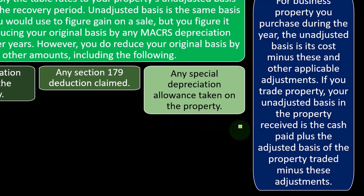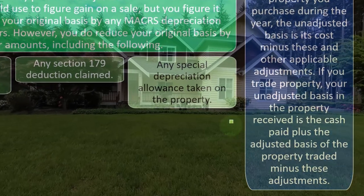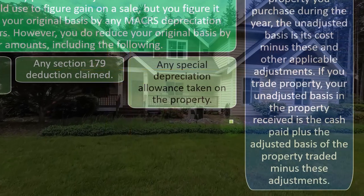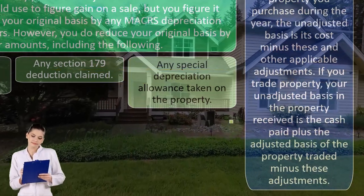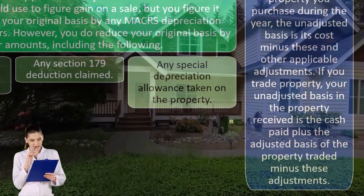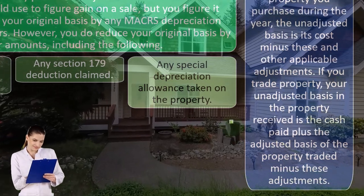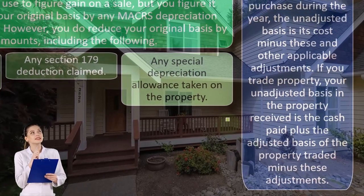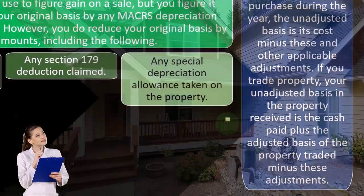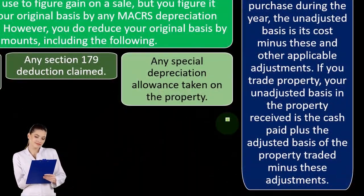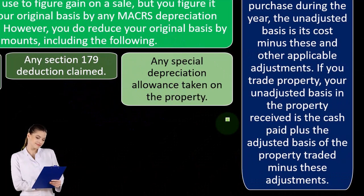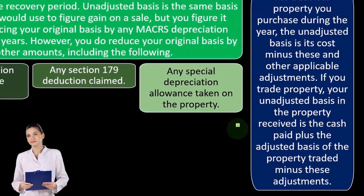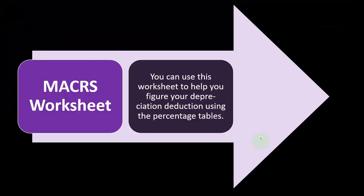So if you trade property, your adjusted basis is the property received plus the cash paid, plus the adjusted basis of the property traded, minus these adjustments. In my opinion, I would use tax software to help me calculate, and then often use the tables possibly to double-check that calculation and to do projections out into the future. And then you can use the software and the tables to see if everything's lining up properly between your projections and what's been calculated in the current year.